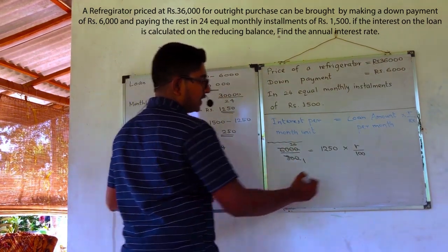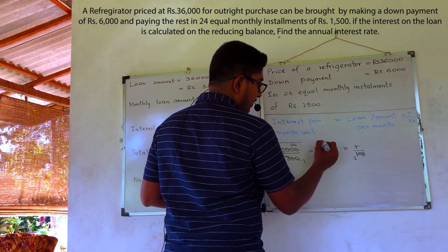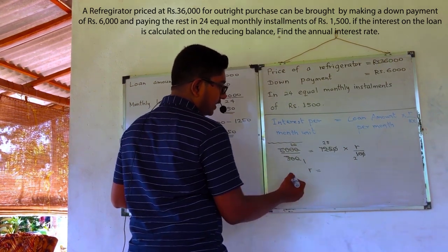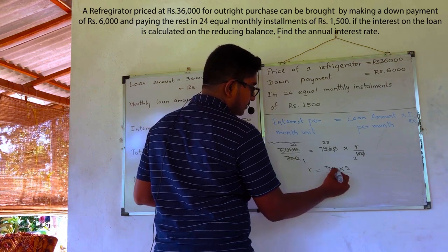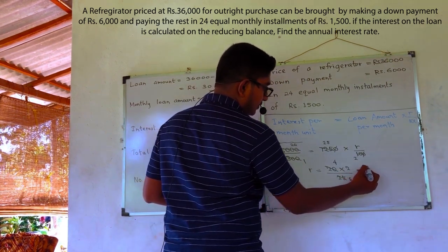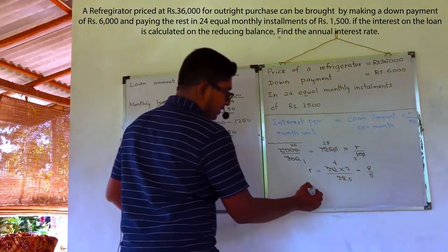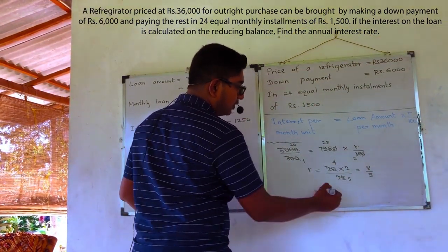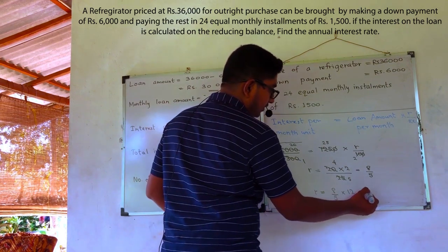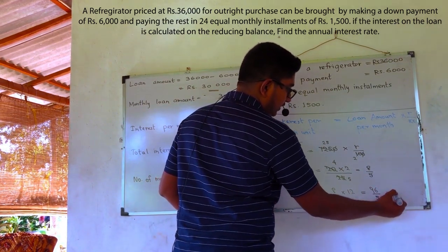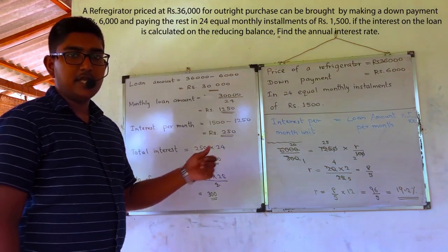Then we get 20, and we can cancel the two zeros. 5 times 25 equals 125. When we solve for R, we have 20 multiplied by 2, divided by 25, which gives 8 over 5. This is the monthly interest rate. If we want to calculate the annual interest rate, we multiply this fraction by 12. When we multiply, we get 96 over 5, which is 19.2 percent. So 19.2% is the annual interest rate.